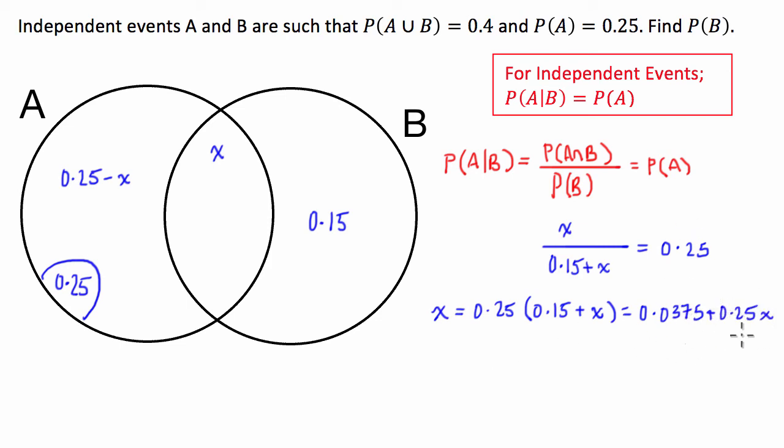So what I'm going to do is I'm going to take the 0.25X to the other side. So X takes 0.25X is 0.75X. That's going to be equal to 0.0375. And I'm going to divide both sides by 0.75. And what we finish up with is X is equal to 0.05.